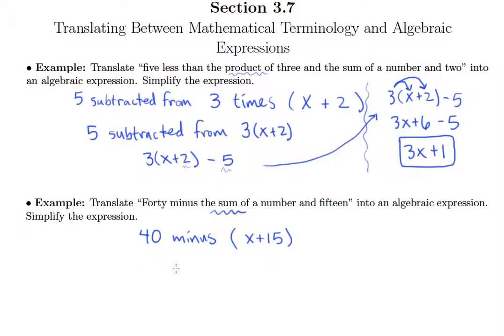And whenever you see the word minus, that just means that we're going to keep the same order. So this is 40 minus X plus 15.